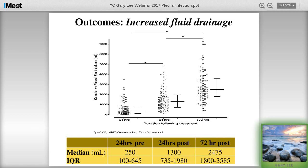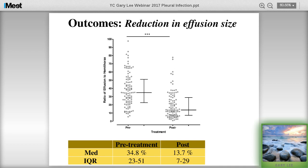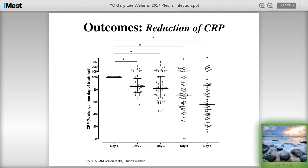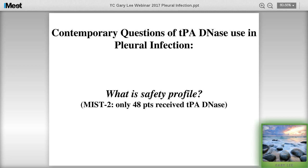The data shows drainage volumes: each circle represents one patient. In the 24 hours before TPA and DNase, median drainage was 250 cc. Within 24 hours of starting, 1.3 liters. After three days' worth of TPA and DNase, the cumulative total is 2.5 liters drained. The percentage of hemithorax covered by pleural opacity dramatically reduced from 35% to 14%. C-reactive protein at baseline progressively dropped over the next few days.